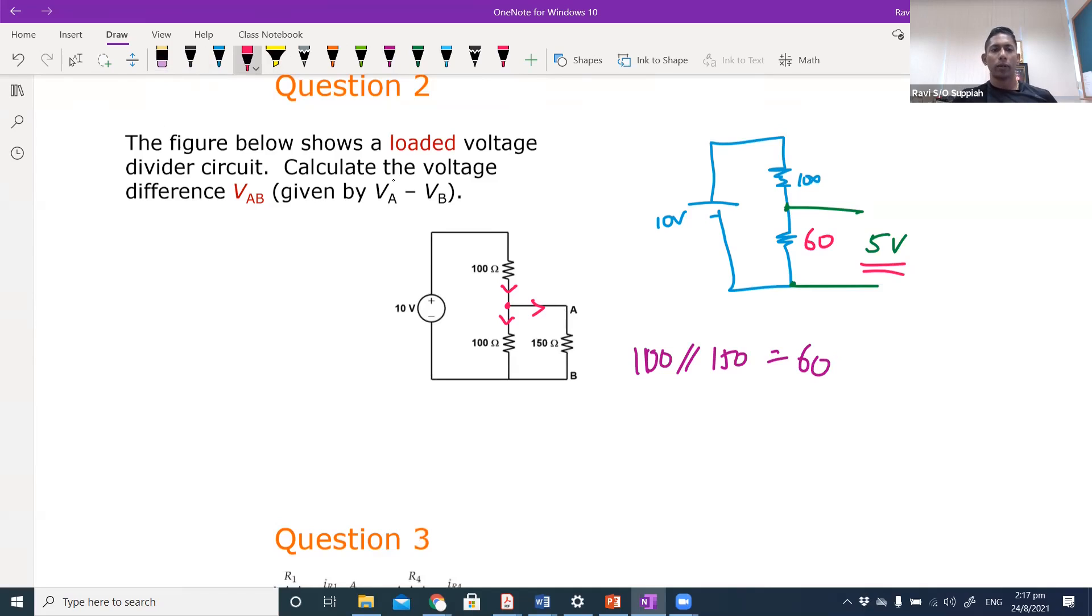When it's 60 ohm, what is the voltage that I see over here? It will no longer be 5 volt, because by voltage divider rule it will be 60 over 60 plus 100 multiplied by 10, which is 3.75 volt. So if I were to connect a load here at AB and that load has a resistance of 150 ohms, then I will see 3.75 volt.